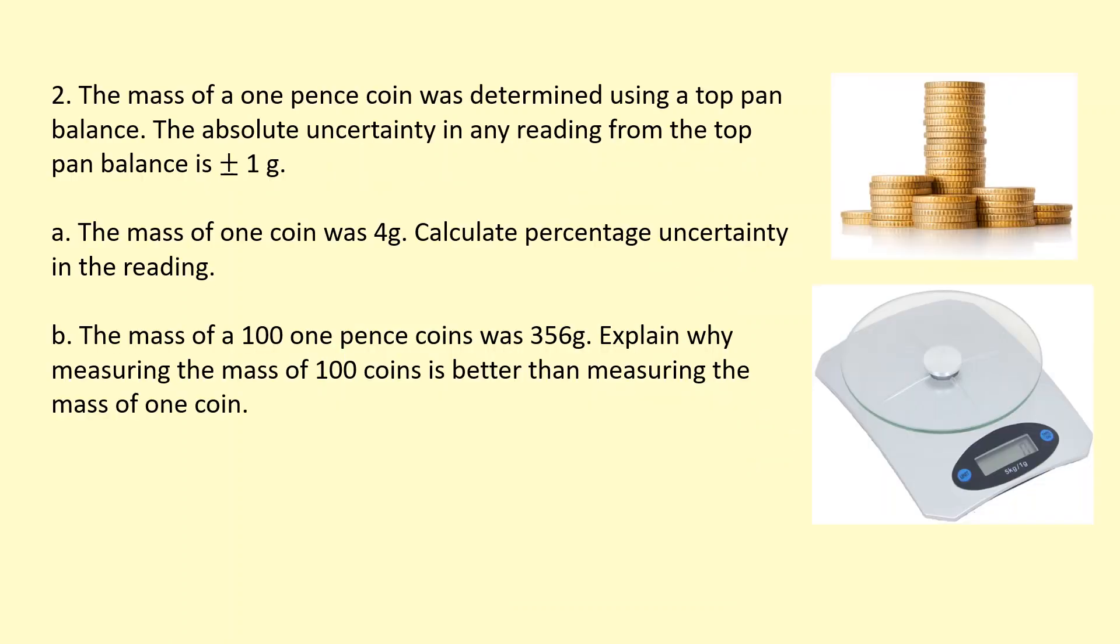I'm going to use this example to demonstrate why taking bigger measurements and readings produces a smaller percentage uncertainty. So here we're trying to find the mass of one coin. The absolute uncertainty in any reading from the top pan balance is plus or minus 1 gram. And that's fixed.